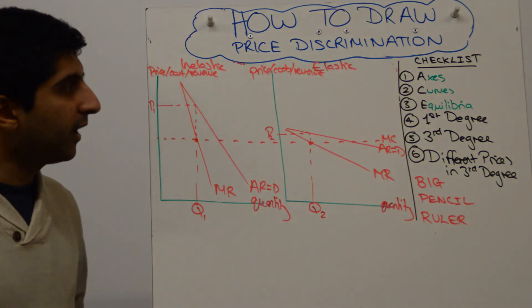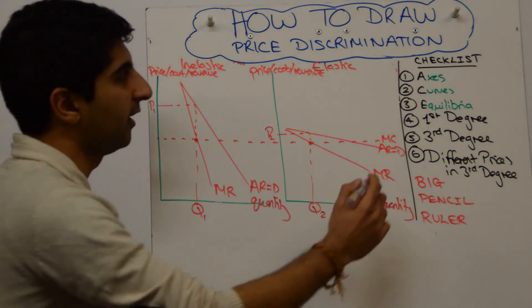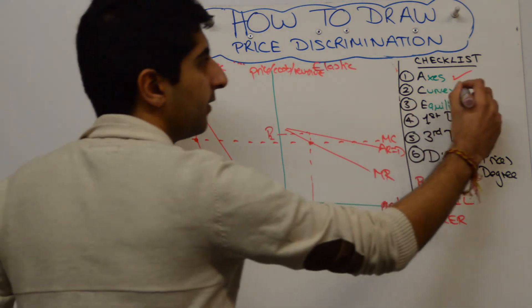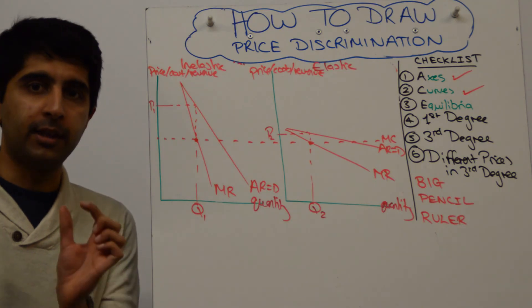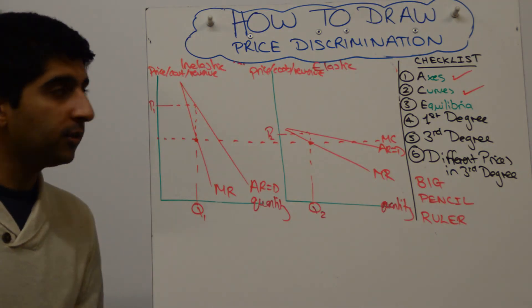So let's go through our checklist. Have we labeled our axis? Yes, we have. Detail. Have we labeled our curves? Yes, we have. Have we got the equilibrium right? We have. The profit maximizing equilibrium in both markets have been labeled. Lovely doubly.